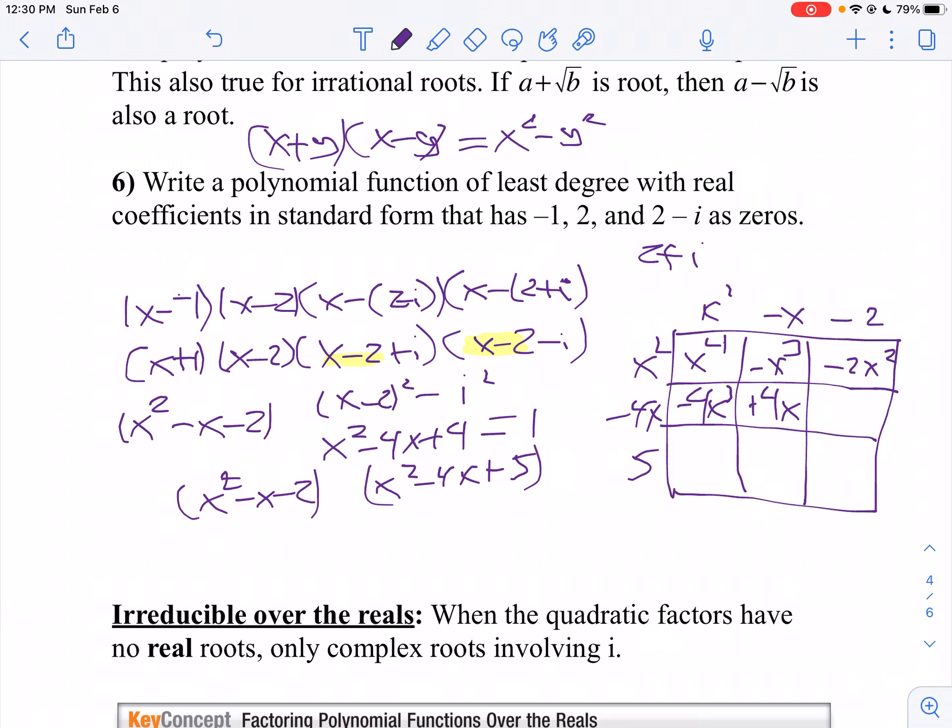Then multiply by 5, I get 5x squared minus 5x minus 10.